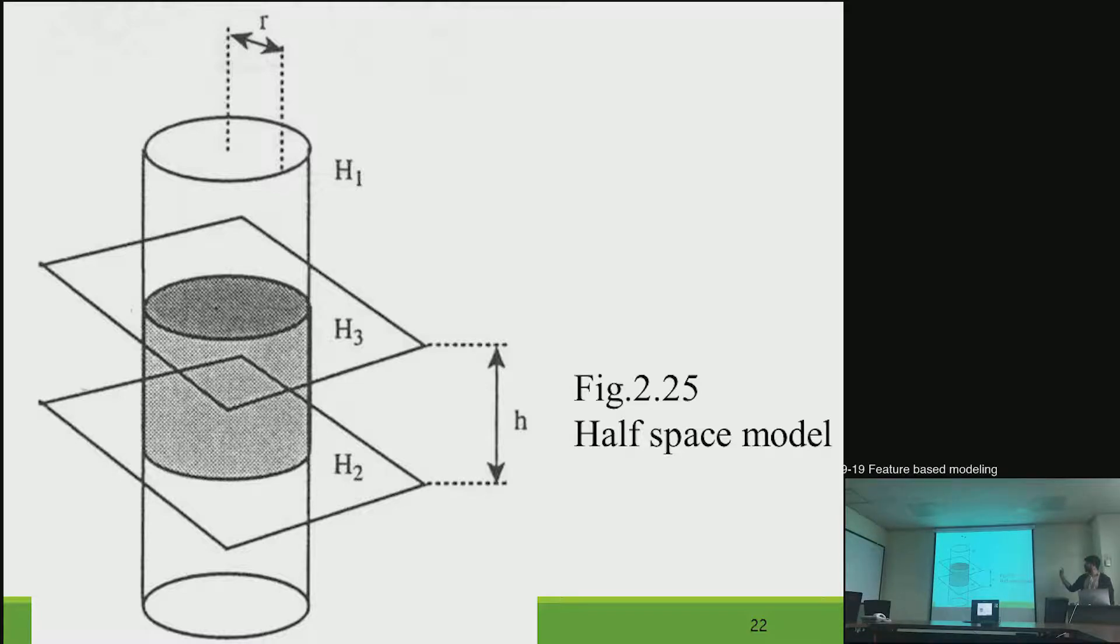So basically the intersection, which is a common operation, a boolean operation, or we can say that it is a set operation, we apply that and we get the gray cylinder. But it is really difficult for us to understand. That is why we move to the CSG.